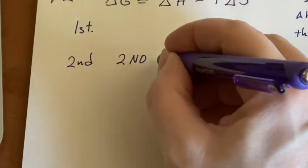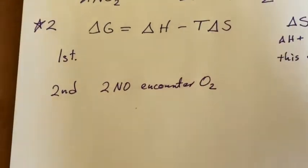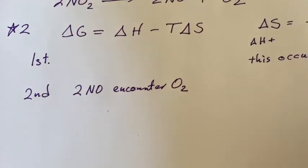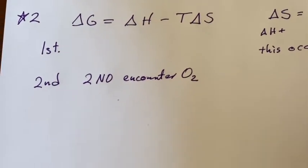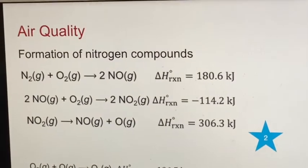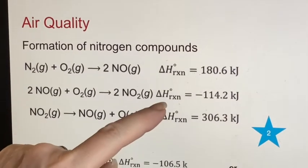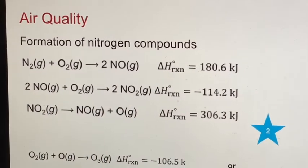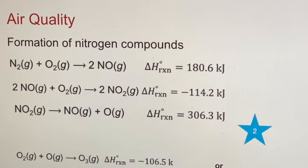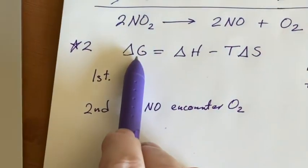So it has to, two of those have to encounter the oxygen in the atmosphere in order to go to the nitrogen dioxide. But it already got a negative sign here for delta H, which will make it easier for delta G to be a negative sign also. Tends to be spontaneous on its own.